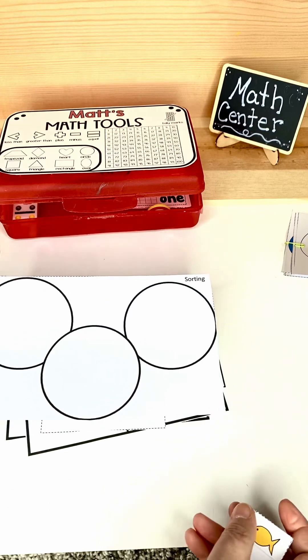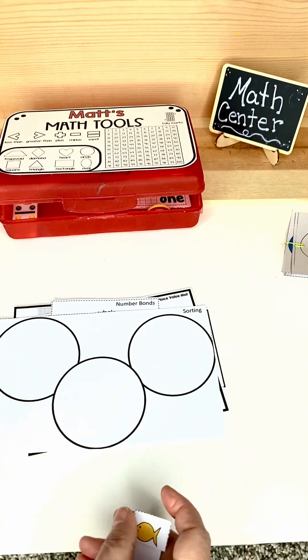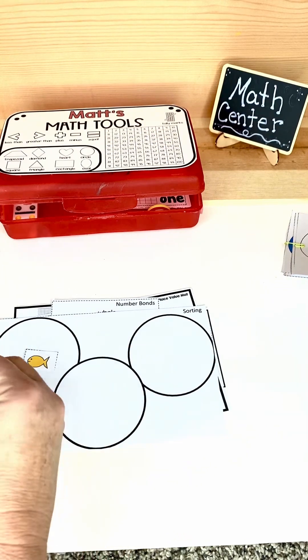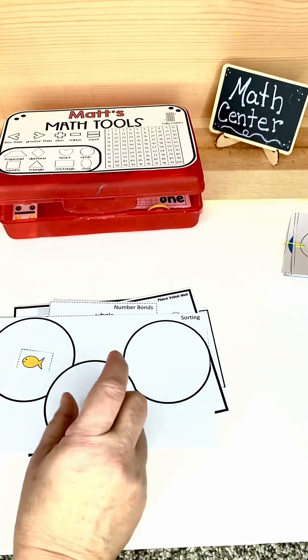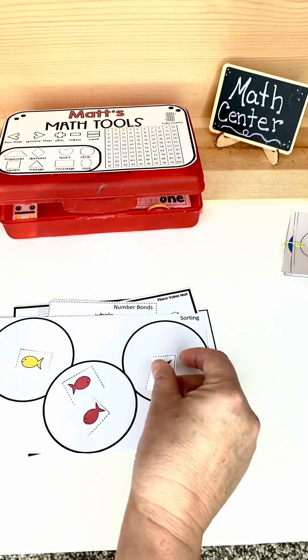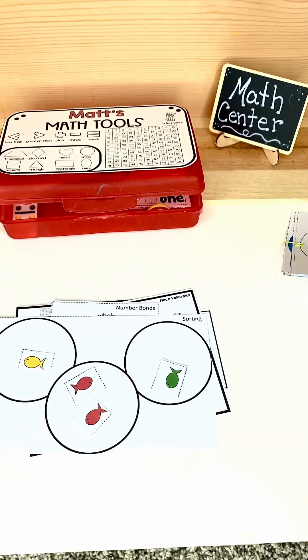This is your sorting mat. You have one that has two circles and this one has three circles. They're all our goldfish or whatever color fish provided inside for you to print and the students can simply sort things that you have inside of their kit.